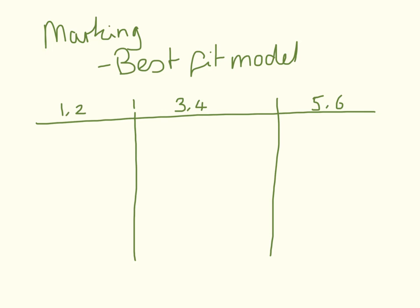The marking for this is going to be a best fit model. It's going to be related to your scientific key points and your quality of written communication. The examiner has to decide: do you fit in this box, this box, or this box? So it's not as simple as just listing six good things — that won't get you the marks even though you've made six points.